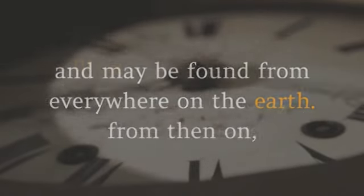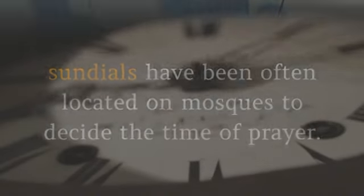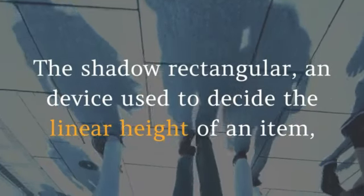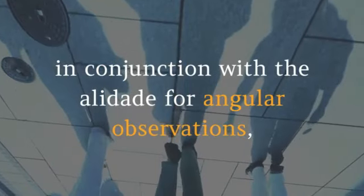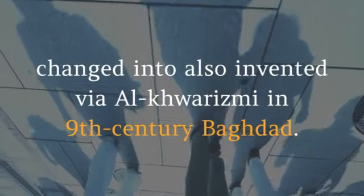From then on, sundials were often placed on mosques to determine the time of prayer. The shadow square, a device used to determine the linear height of an object, along with the alidade for angular observations, was also invented by Al-Khawarizmi in 9th century Baghdad.